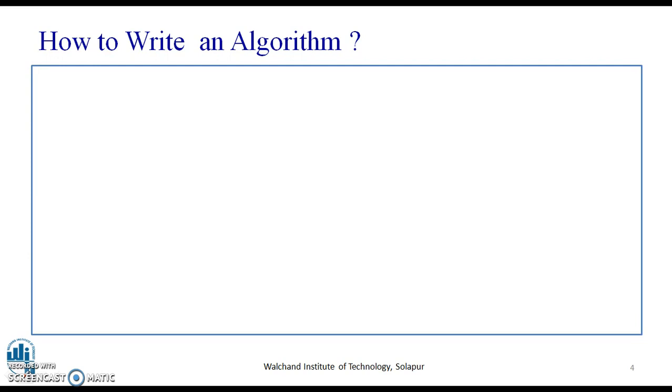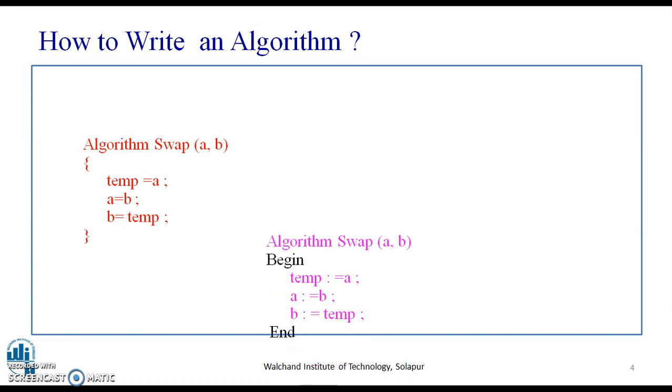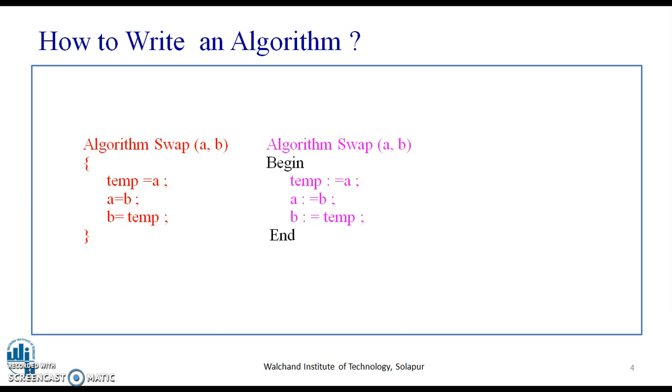When we say how to write an algorithm, consider the given example for algorithm swap a, b. If you notice, this is a simple algorithm with three statements where the intention is to swap the numbers a and b, and it has been done in a very simple way. Here, the use of curly brackets has been done to write the three statements. However, the alternative way suggests use of begin and end with the same statements written in this format. The third format for algorithm swap says the same thing.